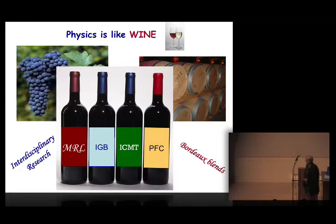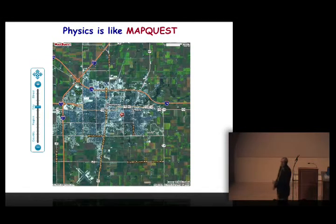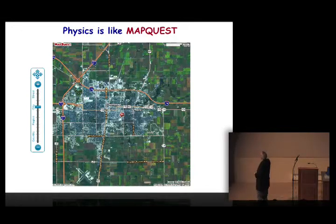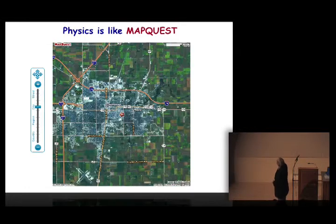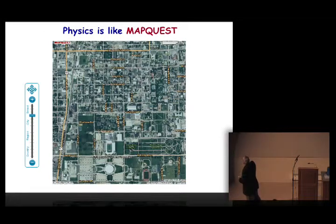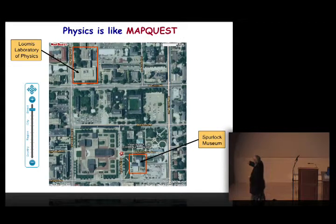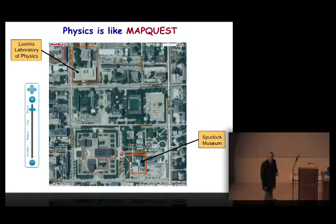But then I really figured out the correct answer. Physics is like MapQuest, or Google Map, or whichever one of these things that you use. Because you can start at some place, here's a picture of Champaign-Urbana, and you can zoom out to look at the state of Illinois or the United States, and you can zoom back in to look at wine. You can zoom back in to look at the campus, and to zoom in to where we are now. Here's the Spurlock Museum, not very far located from the Loomis Laboratory of Physics, the Materials Research Lab, where the experiments I'm going to tell you about were actually done.